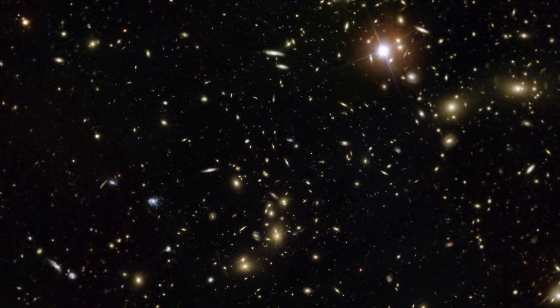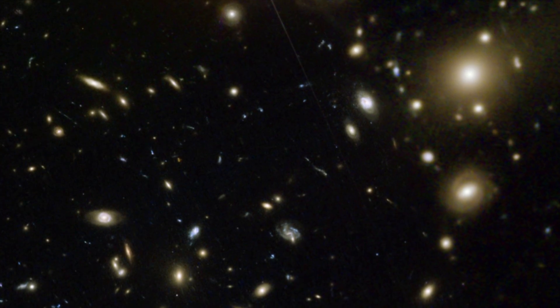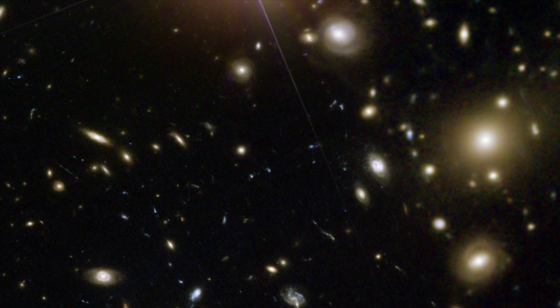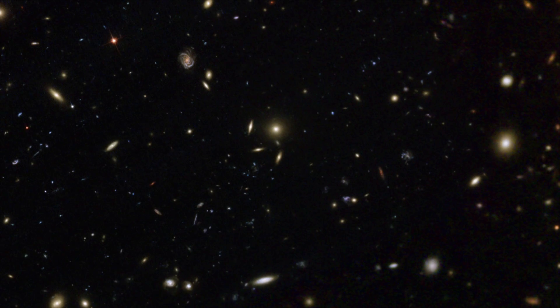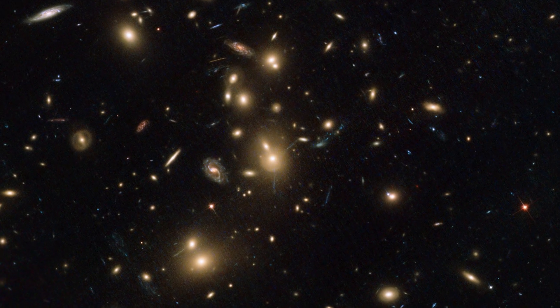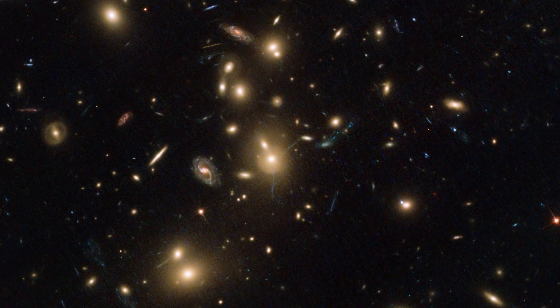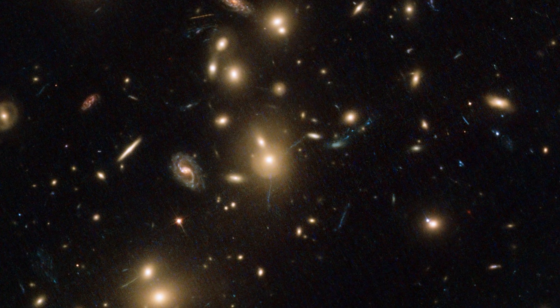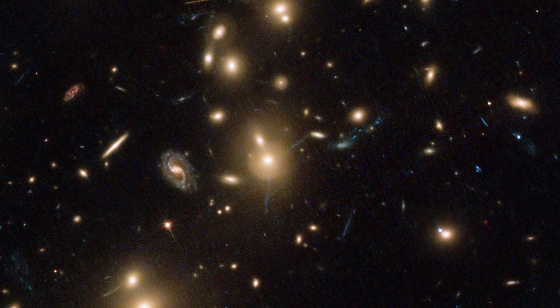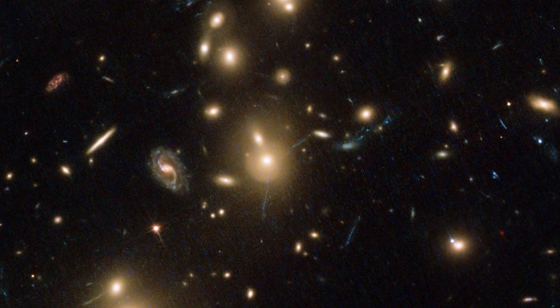ABEL 2744. One of the first and most captivating targets of the Frontier Fields campaign. Like all large galaxy clusters, ABEL 2744's mammoth mass is warping the space around it and magnifying the light from distant galaxies behind it.